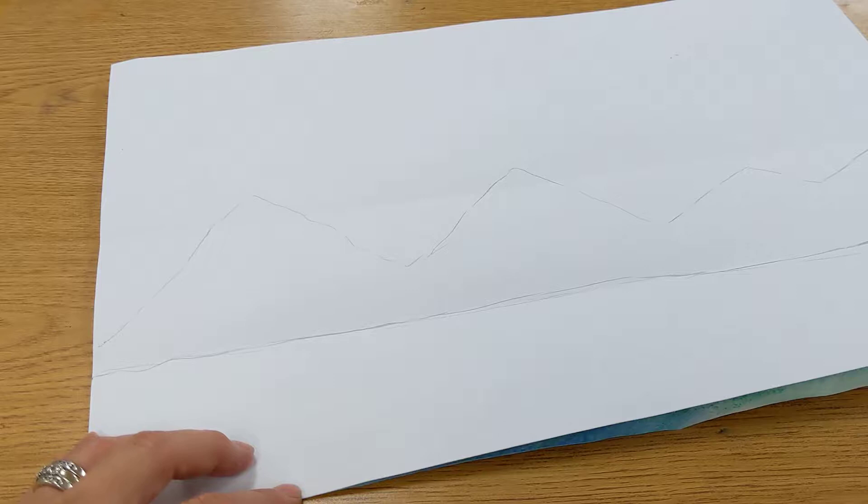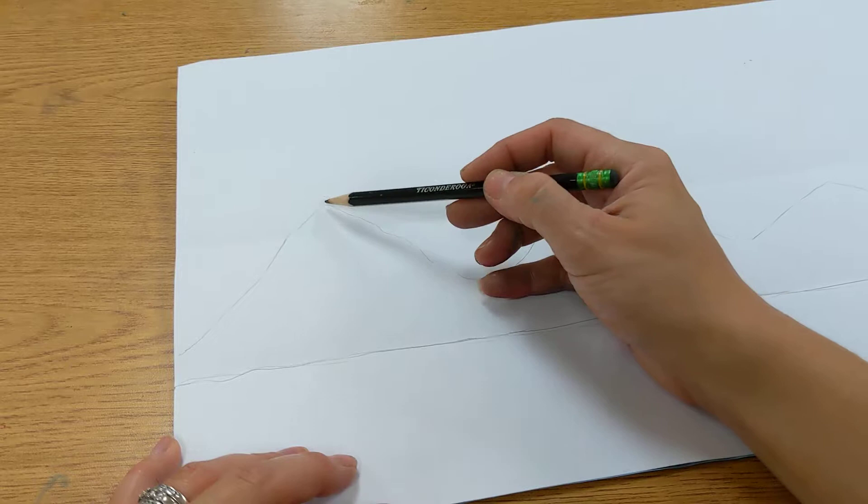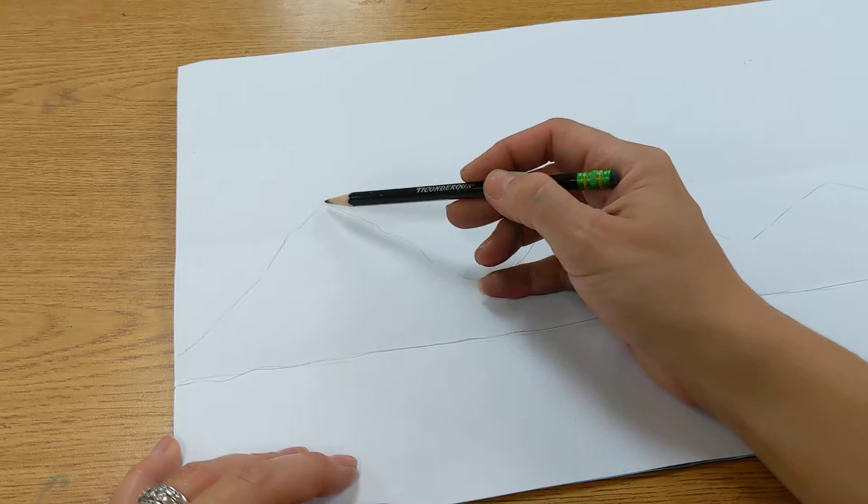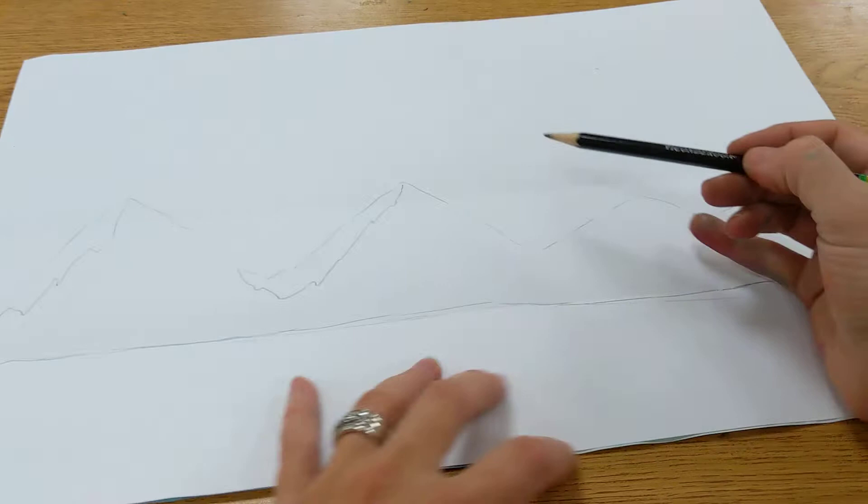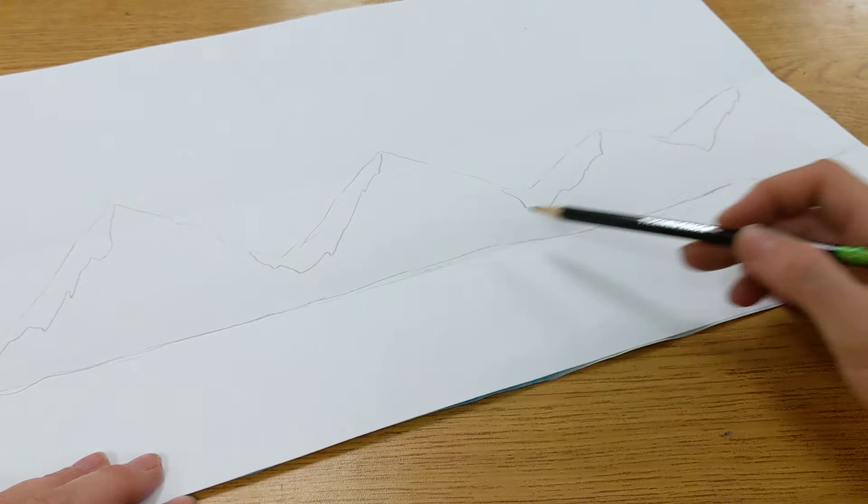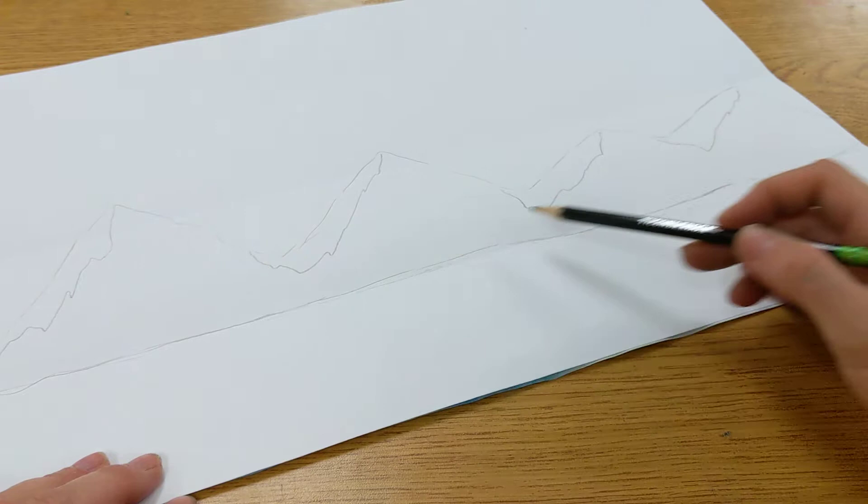And I'm going to add some shadow to these mountains. And a real easy way to add shadow is to start at the peak and to kind of do a zigzag line that goes down. Starting at the peak, zigzag line that goes down.